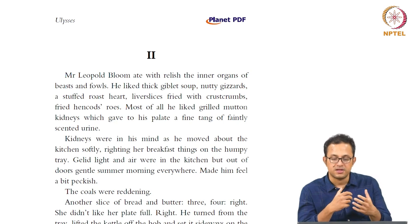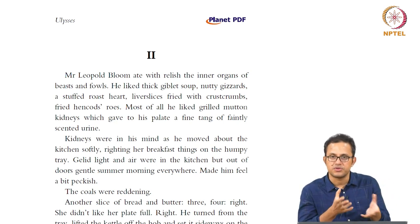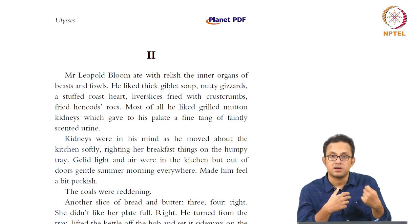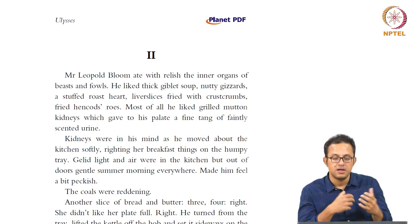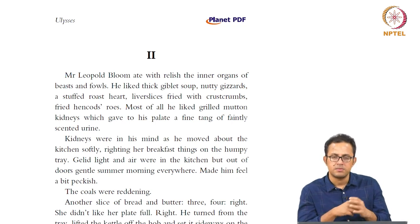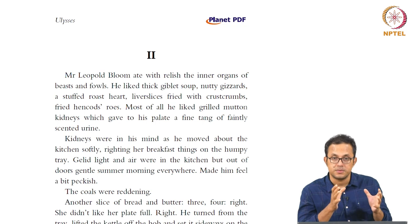The excretory system, the digestive system — all these are constantly talked about as if we get up inside into the inner organs of Bloom himself. The fact that he eats inner organs of beasts and fowls is meant to shock and create disgust. It is also very much part of the gritty realism that Ulysses seeks to achieve and manages to achieve with great success in its location and description of Dublin.